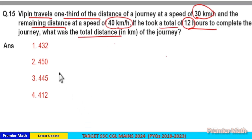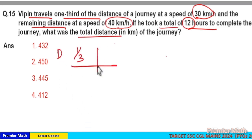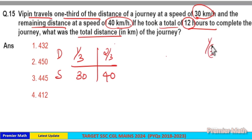Here Vipin travels one-third distance at a speed of 30 km per hour and two-thirds distance at a speed of 40 km per hour. Now one-third means the total has three parts, so write one-third and two-thirds as one part and two parts.